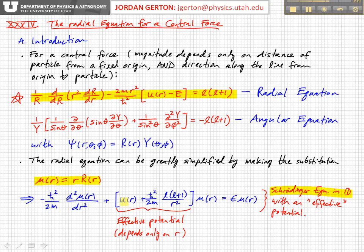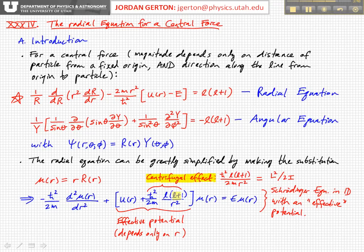Instead of just having the potential u of r multiplying the solution, there's an effective potential composed of the normal potential energy function u of r and another term which characterizes the centrifugal effect: h bar squared over 2m times l times l plus 1 divided by r squared.